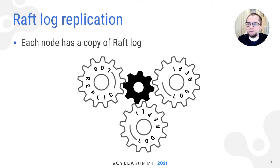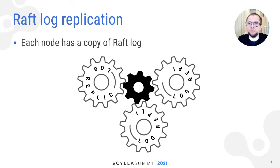Raft is built around the notion of a replicated log. When the leader receives a request, it first stores the entry in its durable local log, then makes sure this local log is replicated to all of the followers — the replicas. Once the majority of replicas confirm that they have persisted the log, the leader applies the entry and instructs the replicas to do the same. On event of leader failure, the follower with the most updated log becomes the leader.